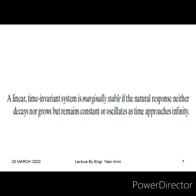Suppose we have a system, we give it some input, and the system starts oscillating — we have undamped oscillations at the output. This is exactly the case seen in the previous lecture about a second-order undamped system, which has poles on the imaginary j-omega axis. We give it a step input and at the output we get sustained oscillations — they don't grow with the passage of time in amplitude, and they don't decay to zero. That is the case of a marginally stable system.